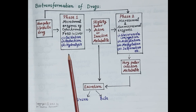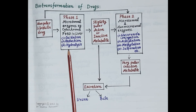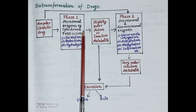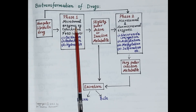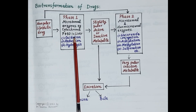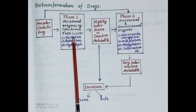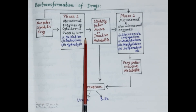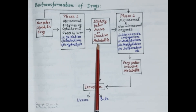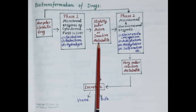Phase 1 reactions include oxidation, reduction, and hydrolysis. These reactions are primarily carried out by cytochrome P450 group of microsomal enzymes, which are located on the smooth endoplasmic reticulum in the liver. These phase 1 reactions cause modification of the drug to produce a slightly polar, that is water-soluble, active or in the majority of cases inactive metabolite.